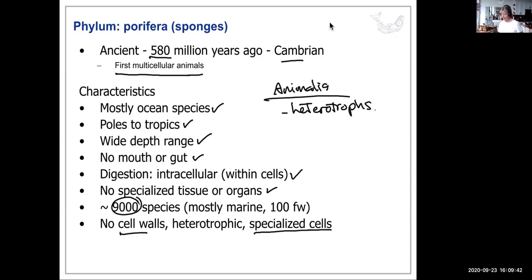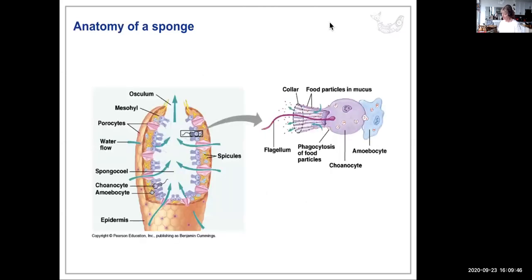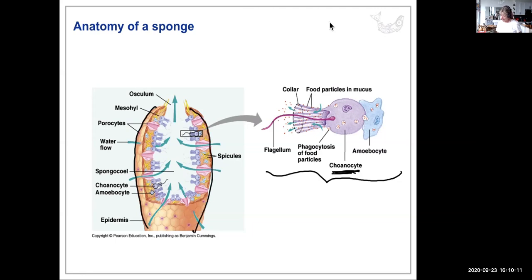Sponges have choanocyte cells — like choanoflagellate-style cells — lining the inside. The outside has pores, hence the name Porifera. The choanocyte's flagellum faces into the interior region known as the spongocoel.